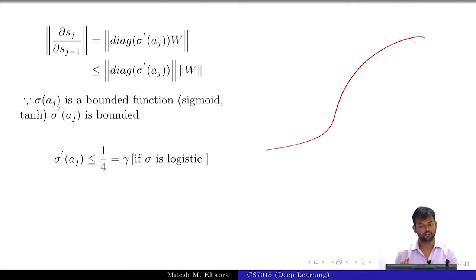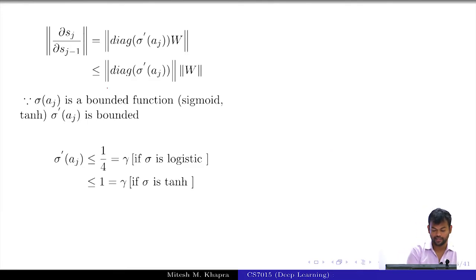For the logistic function, the bound is actually 1 by 4. The maximum derivative that you can get, if you have this curve. So, then that would be 1 by 4. What about the tanh function? And that actually happens at this point, right 0.5. So, 0.5 into 0.5 is 1 by 4. What about the tanh function? The bound is 1. So, this is clearly an upper bound on these things, the derivative is going to be an upper bounded thing.